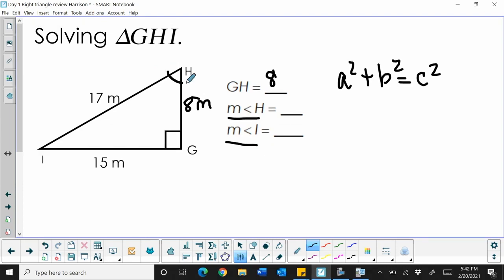So to find angle H, I'm going to look from this perspective and choose two sides, and I'm going to work the two sides that are given. So the two sides that are given are my opposite, which is 15 meters, and my hypotenuse, which is 17 meters. So opposite and hypotenuse, that is the sine function.